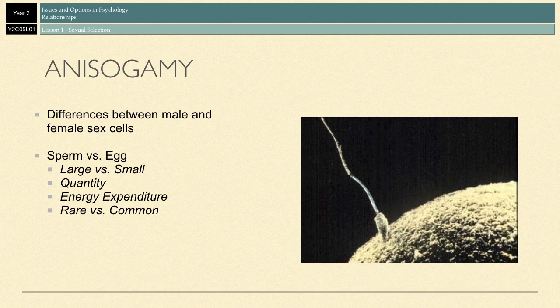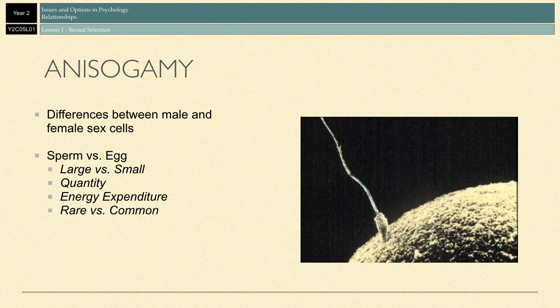The egg is quite large in comparison to the sperm, which is very, very small. Sperm is produced in very large quantities and is very quickly replenished, and is continuously created from puberty all the way through to old age. In contrast, female sex cells take a lot of energy to produce. They're only created in limited numbers during a specific time interval, and their production only lasts for a certain number of fertile years. So the egg is quite rare when compared to sperm, which is very common.